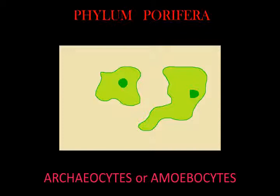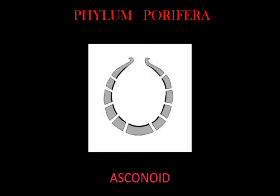The simplest body structure in sponges is a tube or vase shape known as asconoid, but this severely limits the size of the animal. This structure is characterized by a stalk-like spongocoel surrounded by a single layer of choanocytes. If scaled up, the ratio of volume to surface area increases because surface increases as the square of length or width, while volume increases proportionally to the cube. Asconoid sponges seldom exceed one millimeter in diameter.